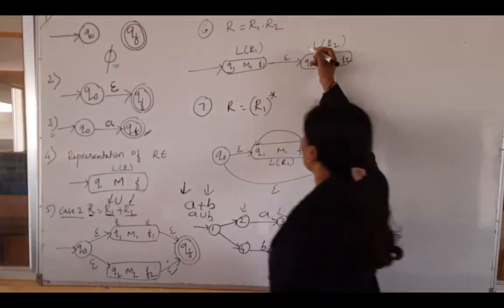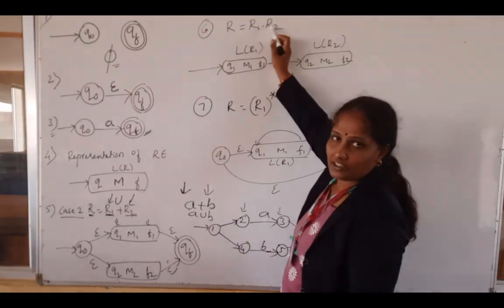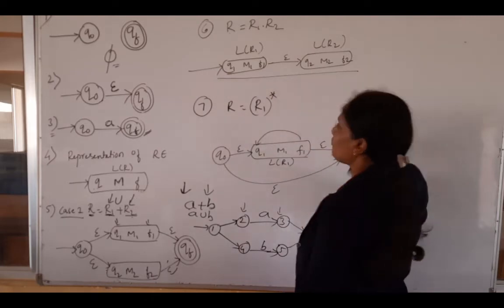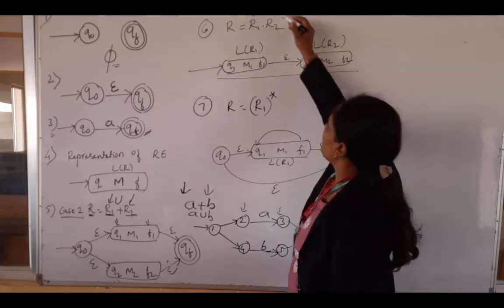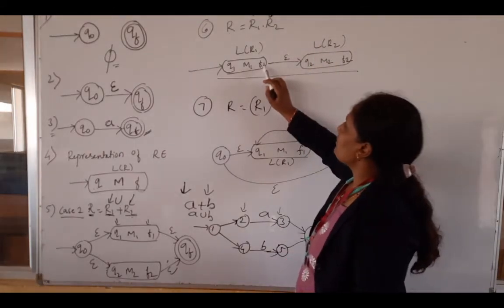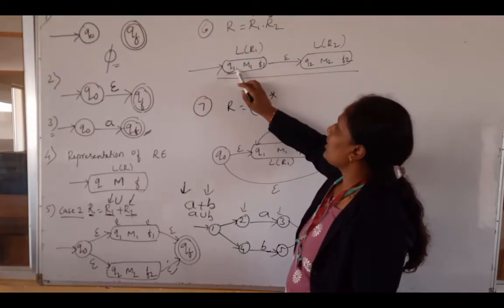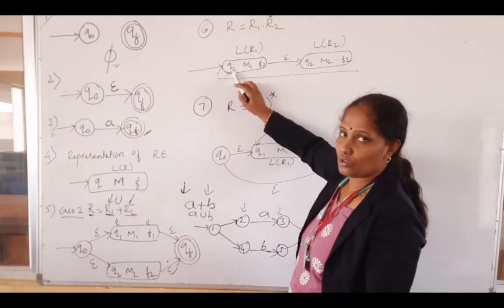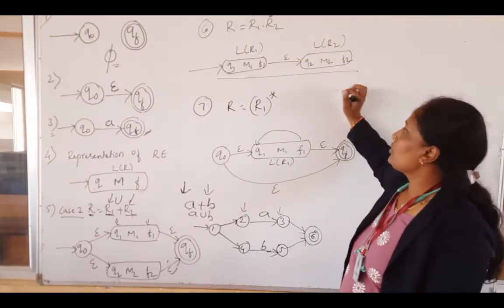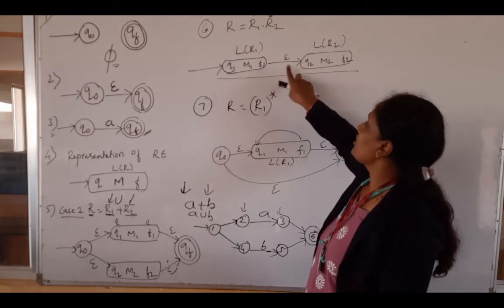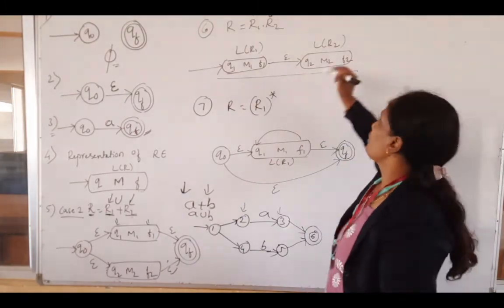For concatenation, r = r1 · r2, first construct a machine to accept r1, then construct a machine to accept r2. Connect the final state of the first machine to the start state of the second machine using an epsilon transition. The start state of r1's machine becomes the overall start state, and the final state of r2's machine becomes the overall final state.